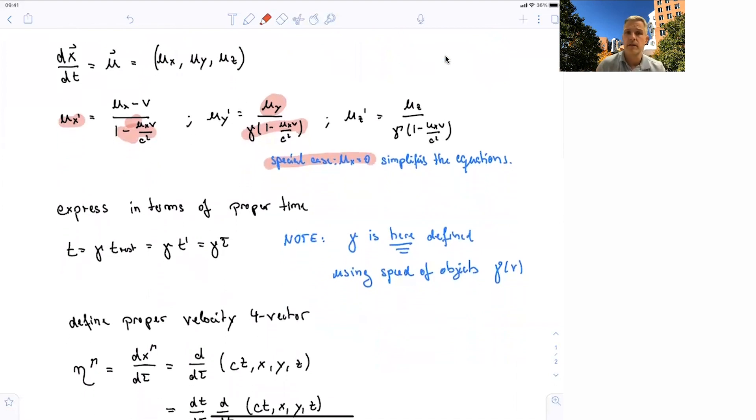Let's try to express velocities in terms of the proper time, the time as it ticks in the object's reference frame. So we have seen that the time is given by gamma times the time in the rest frame or gamma times the proper time. Note here that we have two different gamma factors to play with.